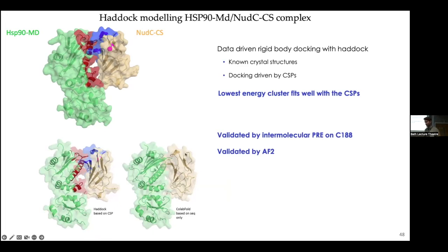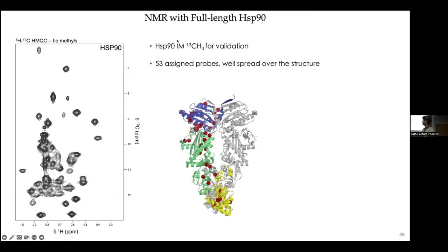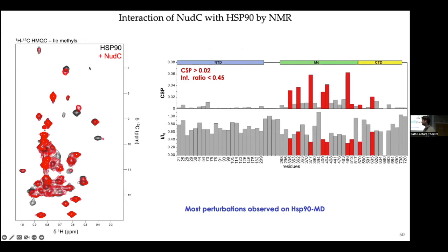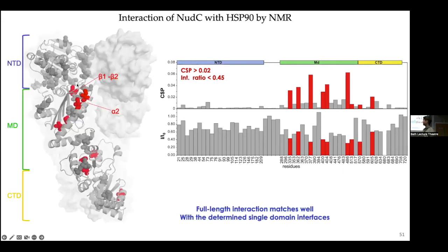AlphaFold predicts the interaction perfectly, which is good for us as an extra validation that the complex is correct. We then had to validate everything in the full-length HSP90, where the methyl assignment becomes essential. Using isoleucine and methionine labeling — a more affordable sample — we get around 53 methyls well spread over the structure. Adding full-length NUTC to this gives a spectrum where many peaks are unaffected but some show very strong shifts. Reporting these on the sequence shows a very similar conclusion to the isolated domain: the N-terminal domain is not affected by NUTC addition, and most perturbations are in the middle domain around the beta1-beta2-alpha2 binding site.